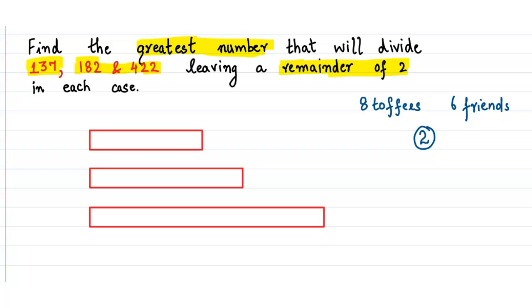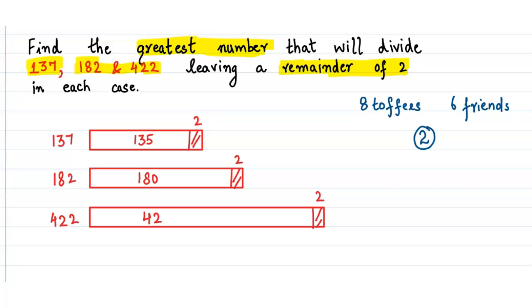Now just imagine these 3 numbers: 137, 182, and 422. What is the extra part which cannot be divided in each case? Yes, it is 2. This is the extra part which I am marking, and in each case it is 2. So what is left? It is 135, 180, and 420.